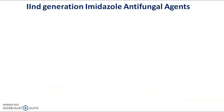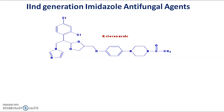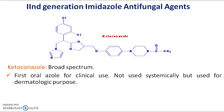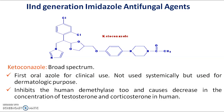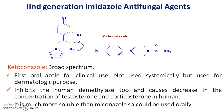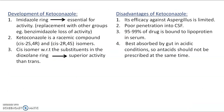2nd generation imidazole antifungal agents include ketoconazole. Ketoconazole is a broad spectrum antifungal agent and is the first oral azole for clinical use. It is not used systemically but is used for dermatologic purposes. It inhibits the human demethylase and causes a decrease in the concentration of testosterone and corticosterone in humans. It is much more soluble than miconazole and so can be used orally.